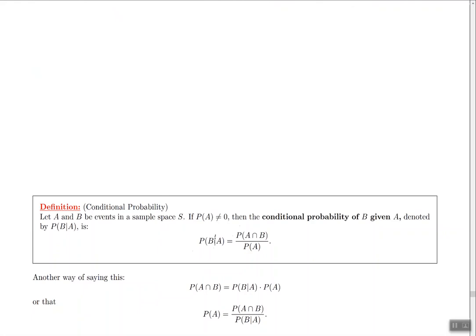So the little slash that you're seeing right here between B slash A, that slash represents the word given. So when I read this I'm reading the probability of event B given that A already happened. And so the question is what's the answer to this one?